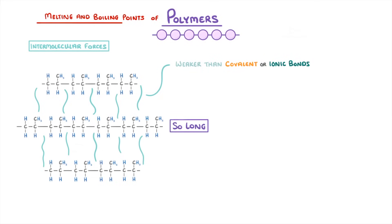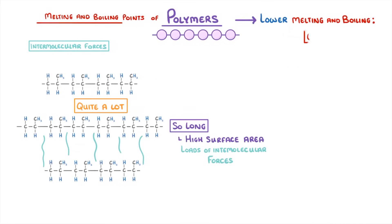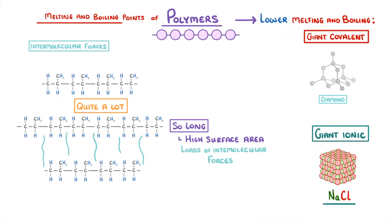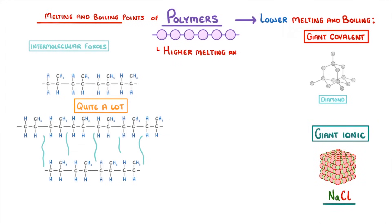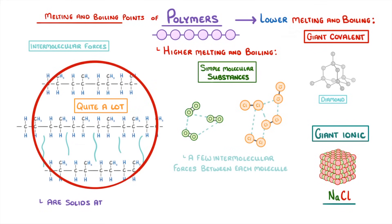However, because the polymers are so long, they have a high surface area, and so there are loads of these intermolecular forces, which means that to break them all would still require quite a lot of energy. So although polymers have lower melting and boiling points than giant covalent structures like diamond, or giant ionic structures like sodium chloride, they do have higher melting and boiling points than simple molecular substances like oxygen or chlorine, which only have a few of these weak intermolecular forces between each molecule. This is the reason why polymers are generally solid at room temperature.